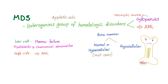As you know from my previous video on MDS, MDS is a heterogeneous group of hematologic disorders characterized by cytopenia such as anemia, thrombocytopenia, and leukopenia — called pancytopenia. There is also a risk for transformation to acute myeloid leukemia. MDS can be low risk with marrow failure, high risk with transformation to AML, or can have myeloblasts and chromosomal abnormalities.